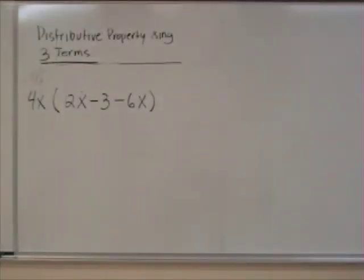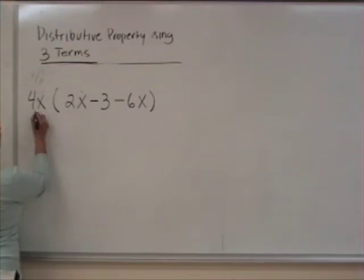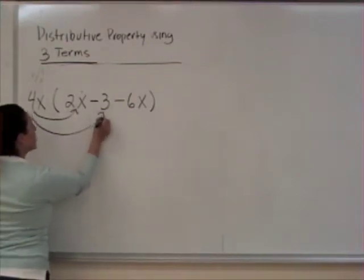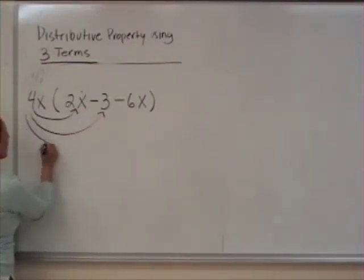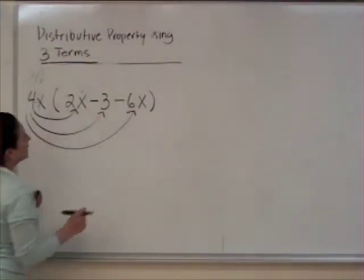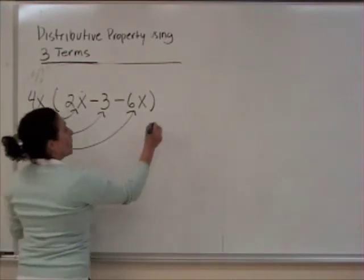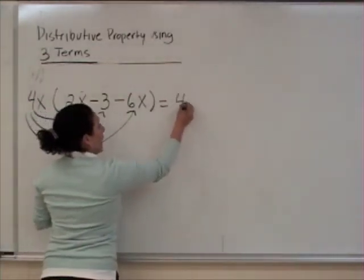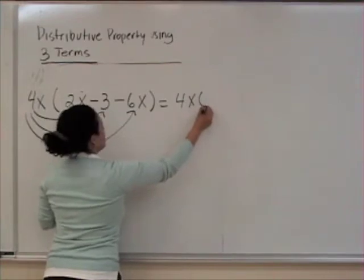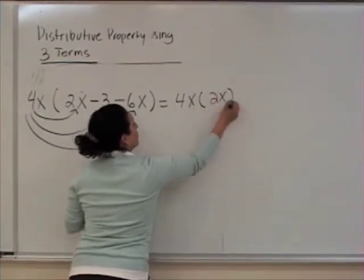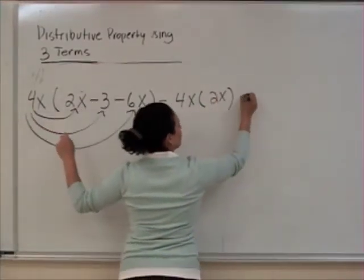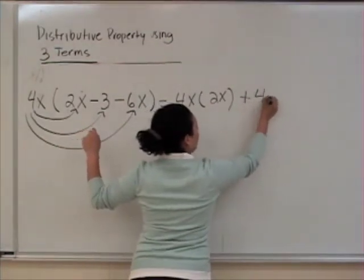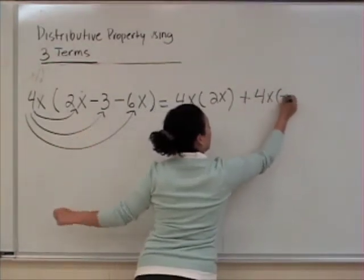We're going to use the distributive property using three terms. So we have 4x that multiplies 2x, then we have 4x that is going to multiply negative 3, and 4x that is going to multiply negative 6x. So: 4x times 2x, plus 4x times negative 6x.